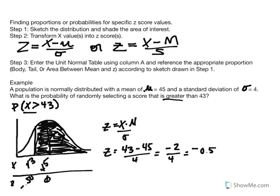We can rewrite our probability statement as: what is the probability of randomly selecting a z-score greater than negative 0.50? Our sketch illustrates that it's the body of the distribution we're interested in. Now we'll flip to the unit normal table to identify the proportion or probability illustrated in this shaded area.